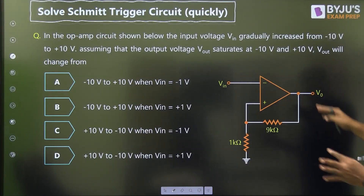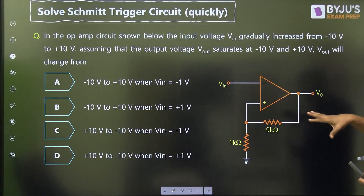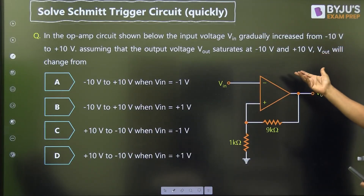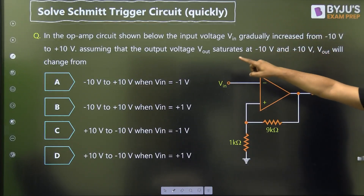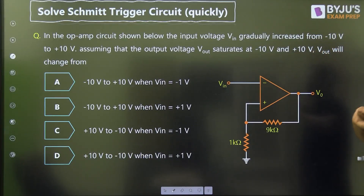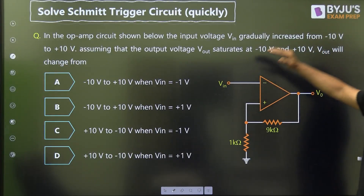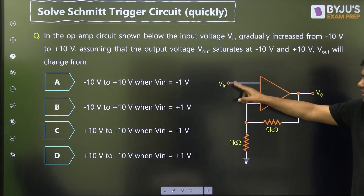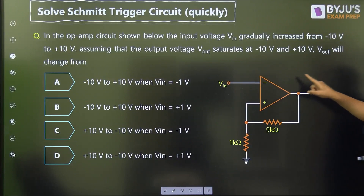Now this is a question. In the operational amplifier circuit shown below, the input voltage gradually increases from minus 10 to plus 10 volts. When the input is highly negative, then definitely because of the 180-degree phase shift, the output is positive — plus V-sat.